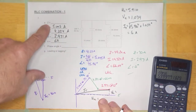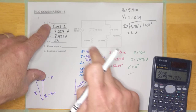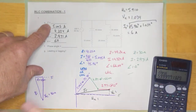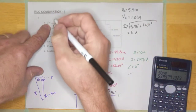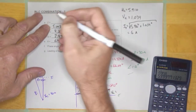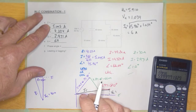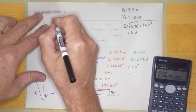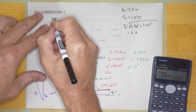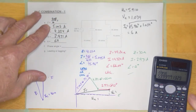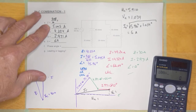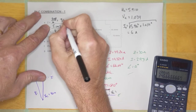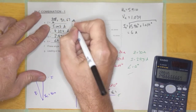The next thing we're going to calculate is the impedance. It is a parallel circuit, so the only way to calculate impedance is with Ohm's Law — Z = E over I. E is 208 and I is 6, so 208 divided by 6 equals 34.67 ohms.